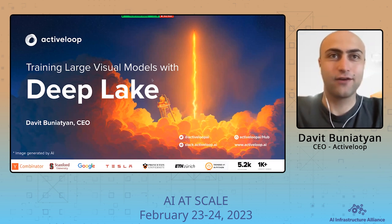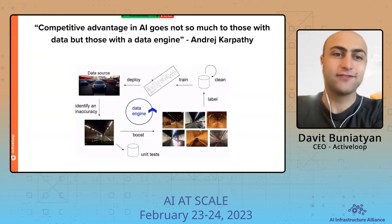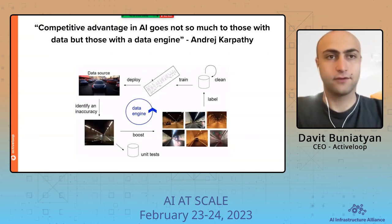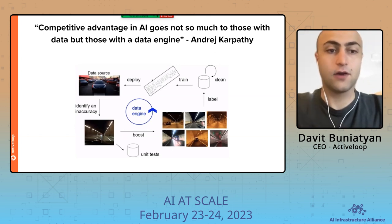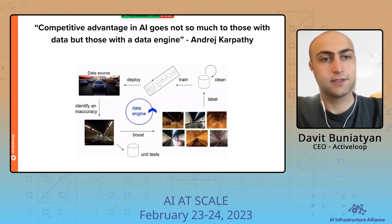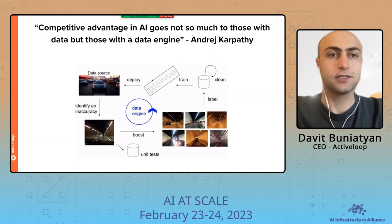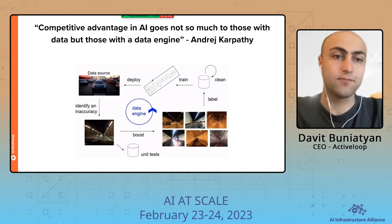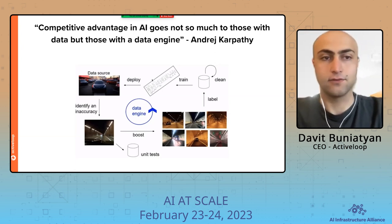To get a competitive advantage, you have to build the data flywheel. Data or the model alone is not enough. You have to iterate on data, collect more information about how your users or consumers or the model are operating, and continuously improve — similar to what ChatGPT has been doing over the past few months, collecting user information, customer conversations, and then retraining the model to make it better. Whoever does this first takes the moat into the AI industry revolution.